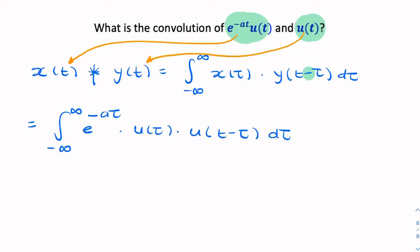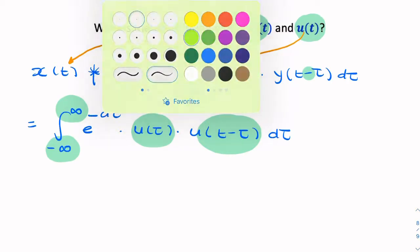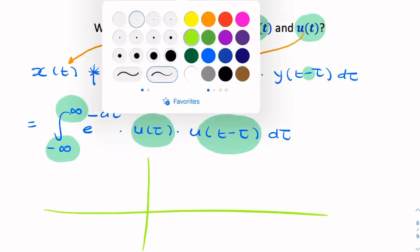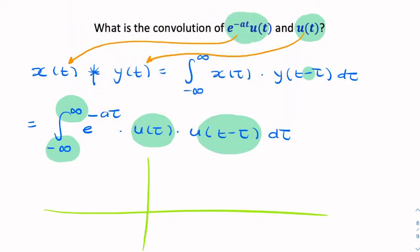Now remember when you multiply a function by a unit step, it allows you to replace the limits of the integration. So let's remember what this looks like. We have a decaying exponential. I won't draw that. I'll just draw the two unit steps. So we have a unit step that starts at tau equals zero, and